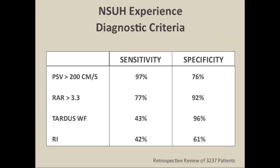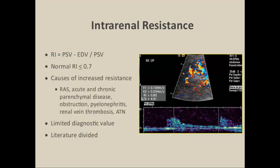Here's data from over 3,000 patients in our series showing that peak systolic velocity tends to be the most sensitive criterion, and combining it with the renal aortic ratio increases specificity. If you have both elevated PSV and elevated RAR, you can be very confident the patient has significant renal artery stenosis. Tardus waveforms are also very specific but not seen in all cases, and the resistive index is essentially like flipping a coin — it's not specific for the diagnosis of renal artery stenosis.